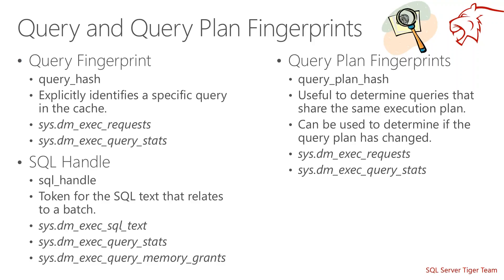There's also the notion of query plan fingerprints. There's a query plan hash, and as a counterpart for the query text, you can use this query plan hash to determine queries that share the same execution plan. For the same query hash you can have more than one plan — for instance, if two sessions have a different number of set options that change execution context, like ARIT_ABORT on or off. So if one query hash has more than one query plan hash cached, that may tell you about such a scenario — useful to understand if the application's session gets a slow plan A while your SSMS session runs fine because of different set options.